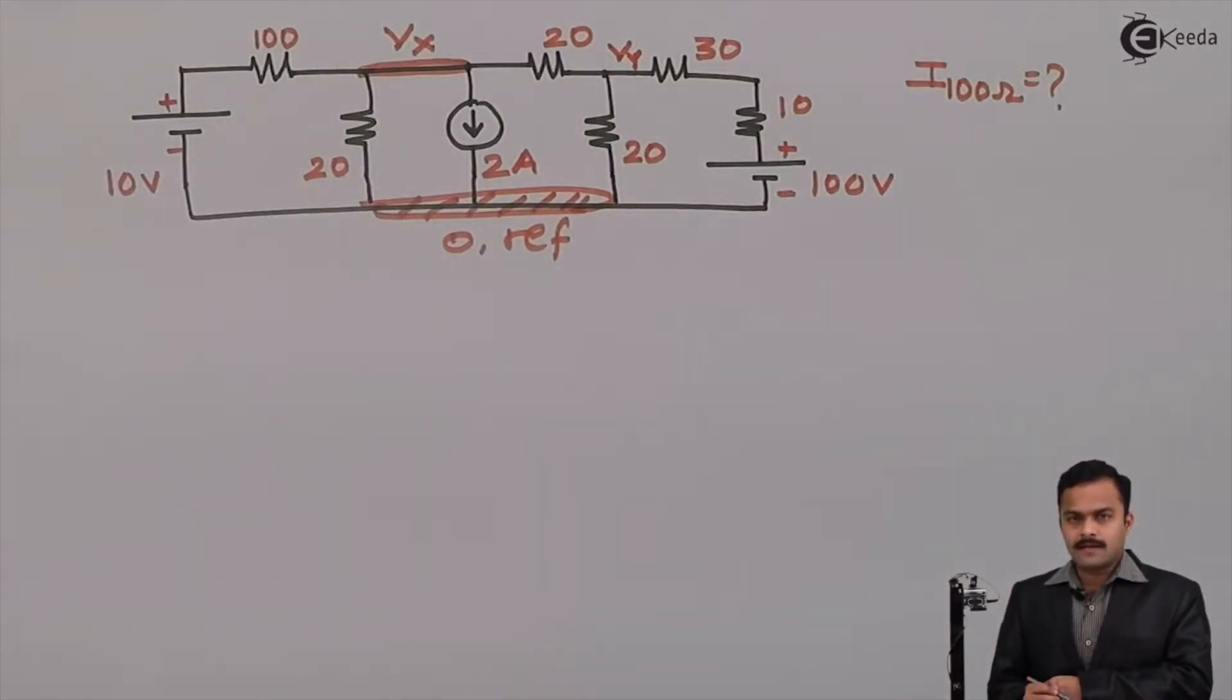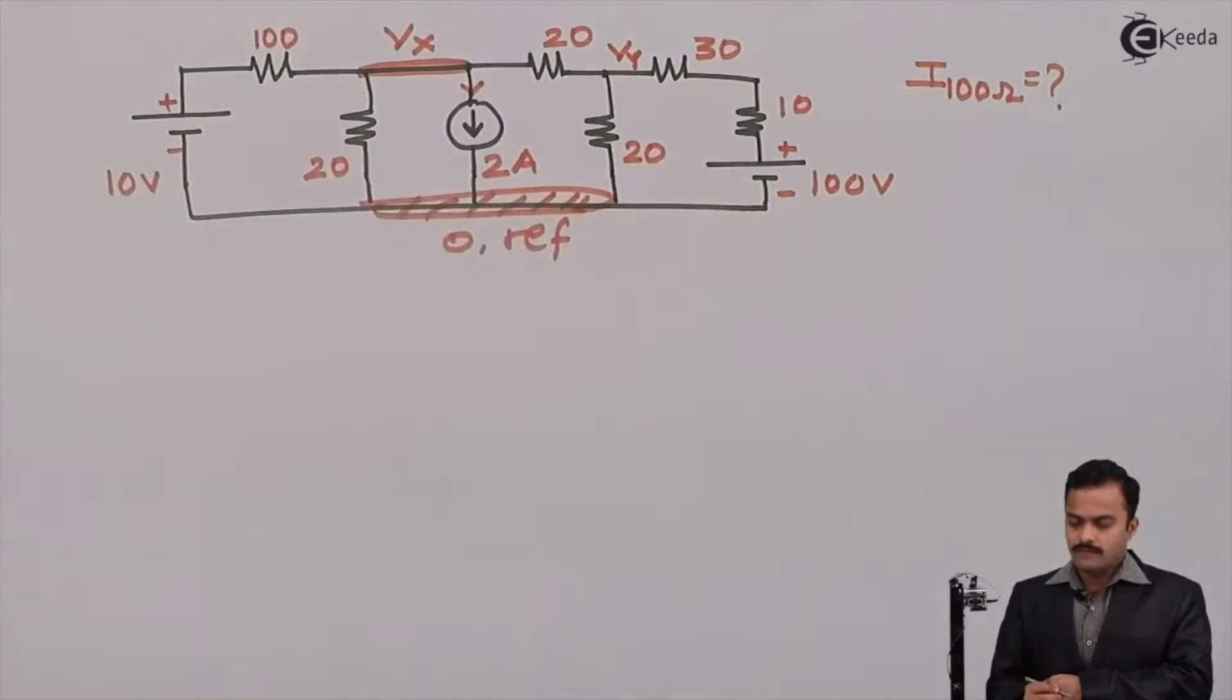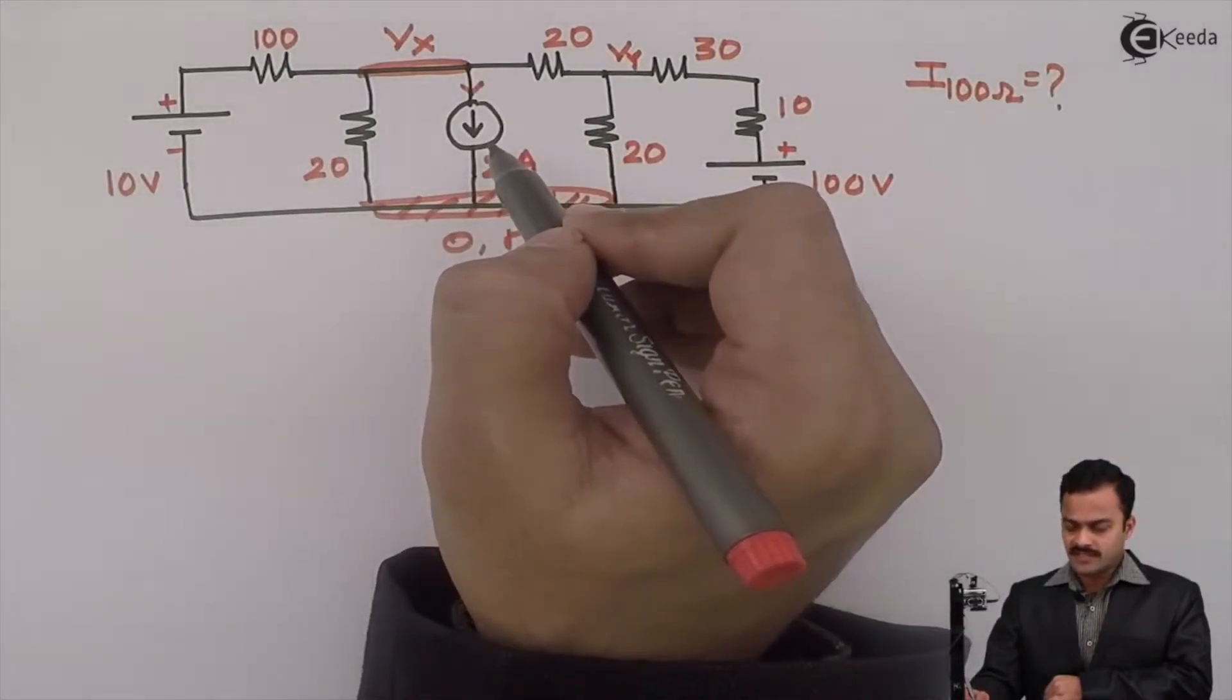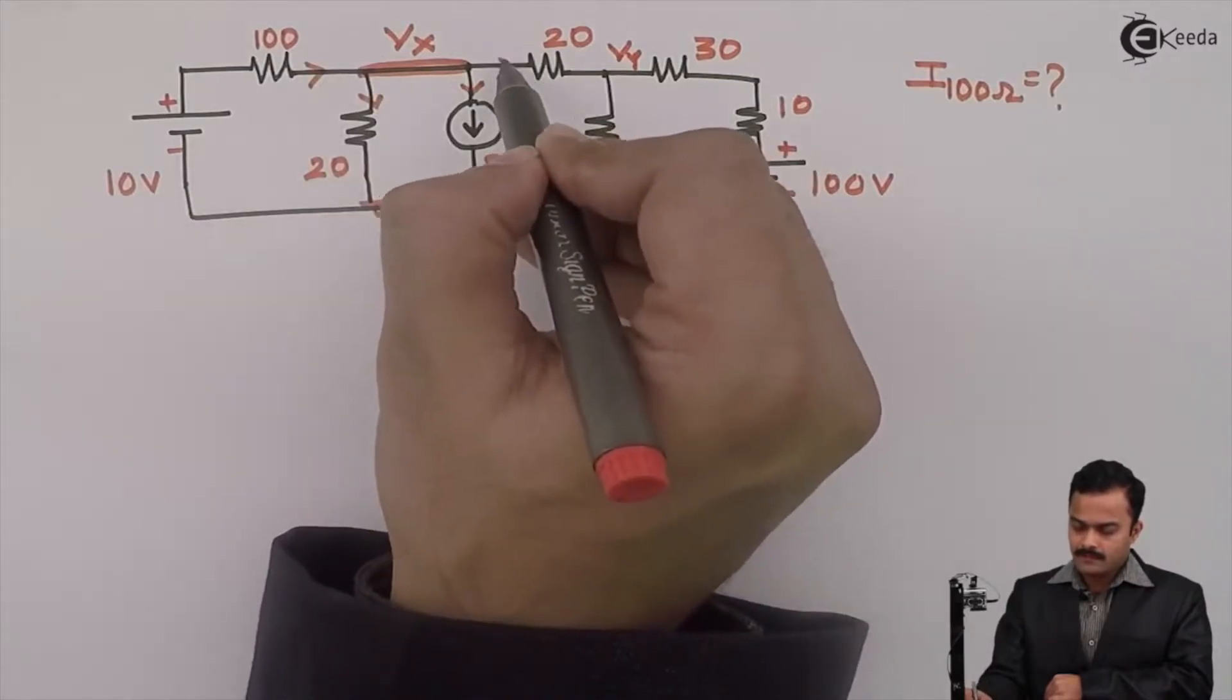Let's mark current directions. Current source is given. So I will mark this branch current same as current source direction. And for remaining branches, I am selecting random directions.